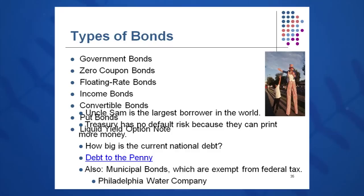So there are lots of bonds out there on the market. Government bonds — Uncle Sam is the largest borrower in the world. There is no default risk because they can always print more money at the Treasury Department. The national debt is huge at this point, and we have to pay it back. If other countries are buying our bonds and loaning us money, we have to pay them back. Currently the national debt is somewhere on the order of 13 trillion dollars — with a T.